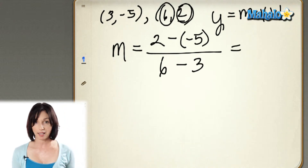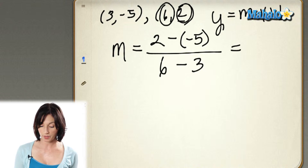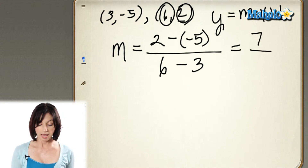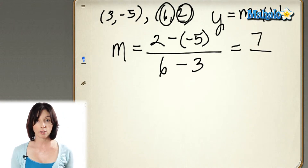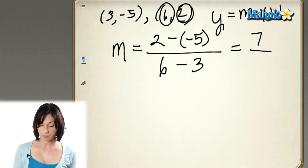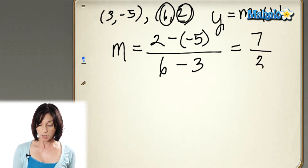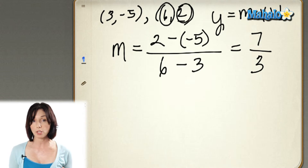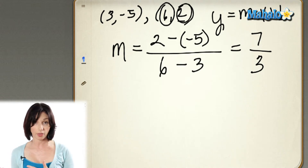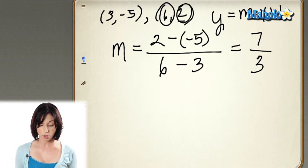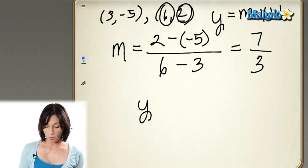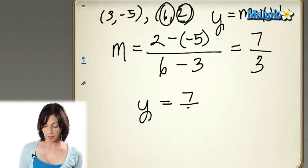2 minus negative 5 is the same as 2 plus 5, so that's 7. And 6 minus 3 is just 3. So the slope of the line that joins these two points is going to be 7 thirds. So far, this is what I have: y equals 7 thirds x plus b.